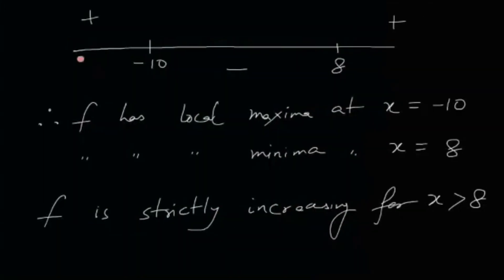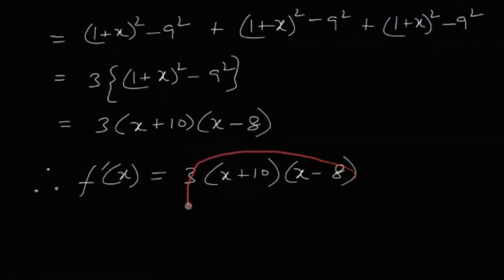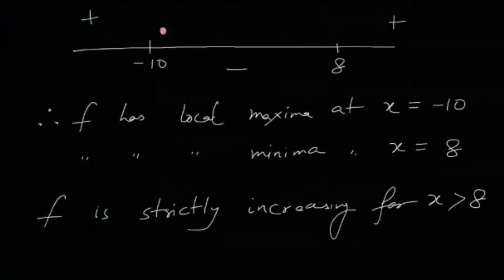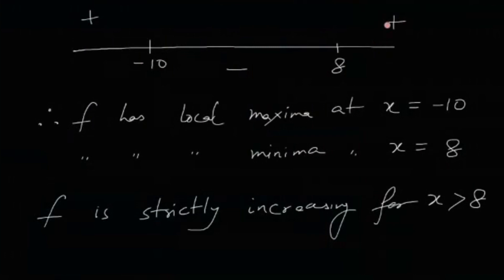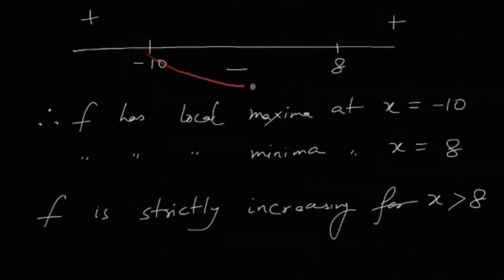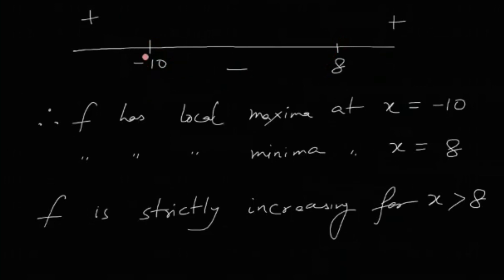The derivative f'(x) = 3(x+10)(x−8) is a quadratic with roots at x = −10 and x = 8. Being an upward-opening parabola, f'(x) is positive for x < −10 or x > 8, and negative for −10 < x < 8. This means the original function f is increasing before x = −10, then decreasing, giving a local maximum at x = −10.